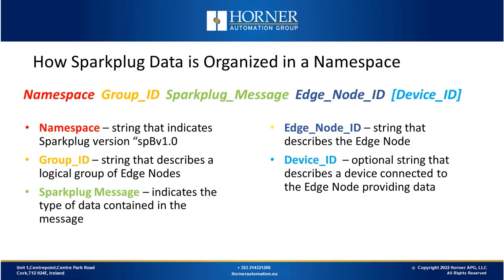Now let's look at the more organised namespace in Sparkplug. The layout starts with a namespace field, which is a fixed string — SPVB 1.0 for Sparkplug B, the latest and most widely used specification. Then there is a group ID, defined as a logical grouping of nodes — for example, in a plant facility the group ID would be the name of the plant. This should be relatively short as it's reported with every data message. Next is a Sparkplug message identifier, usually handled by the edge-of-node device handling the protocol. There are multiple Sparkplug messages, but more on those later.